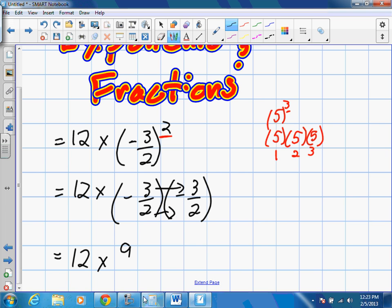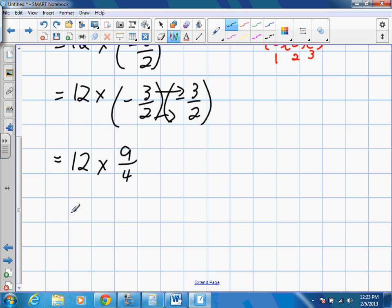And 2 by 2 is going to give us 4. And again, this is going to be a positive term because we multiplied a negative times a negative. Okay.